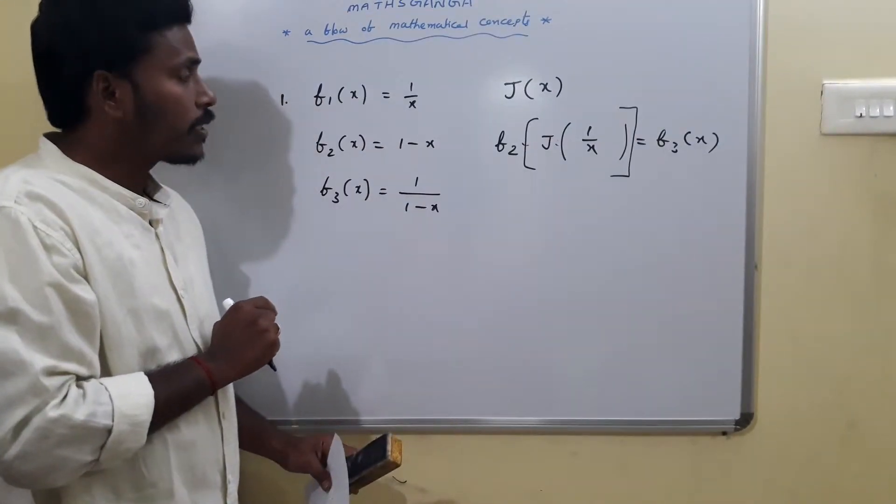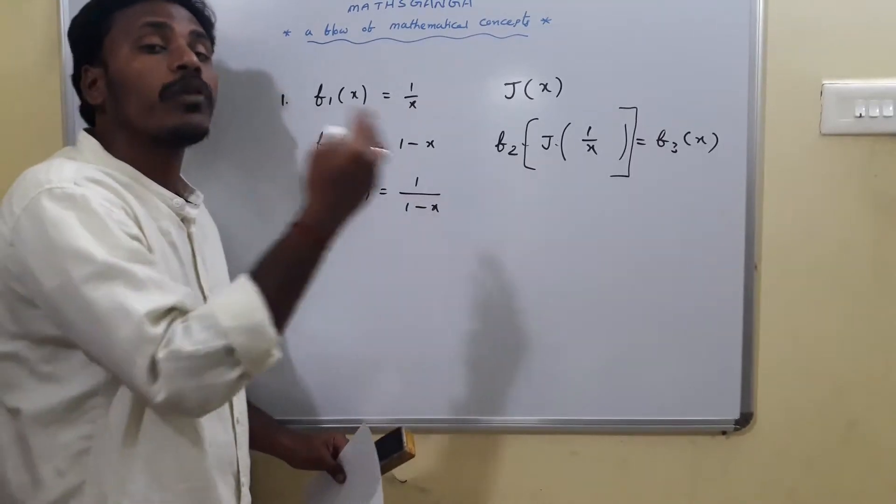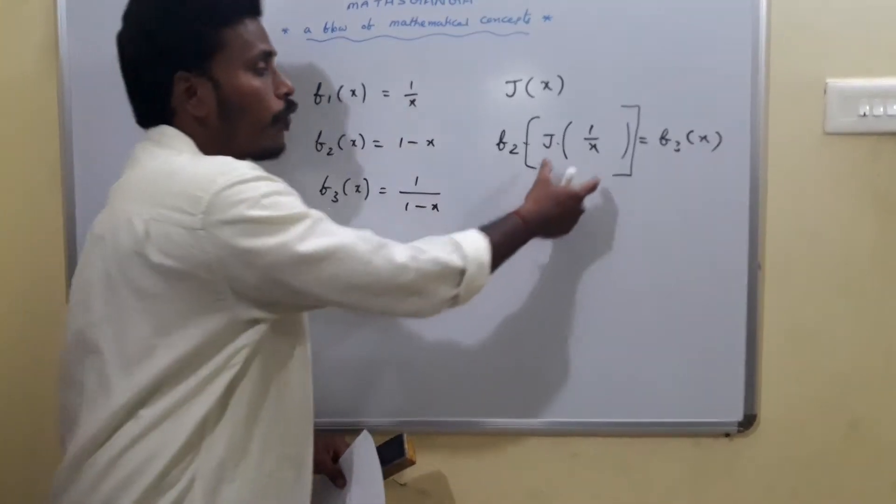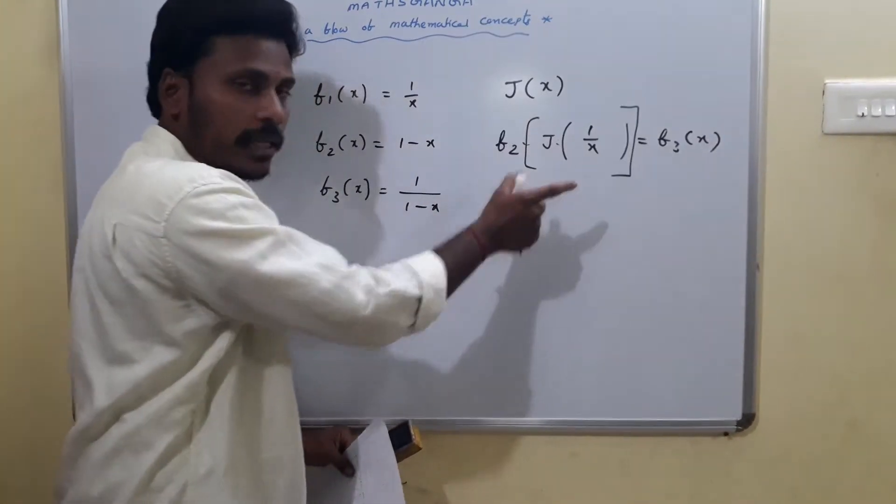What is J of x? We have to calculate that J of x. So for some time, keep this J of 1 by x like this.